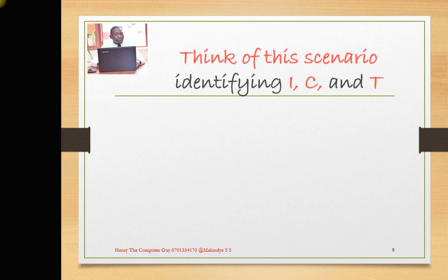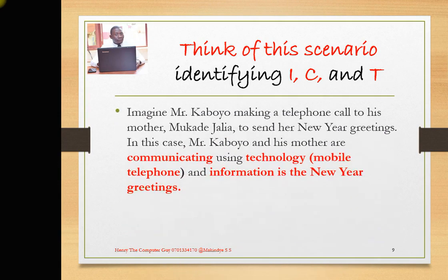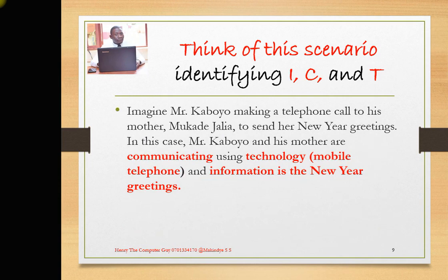We are identifying the I, the C, and the T in some of the components we have identified. They are telling us to think of this scenario: imagine Mr. Kaboyo making a telephone call to his mother, Mkadejalia, to send her New Year greetings. That means Mr. Kaboyo and his mother are communicating using a mobile phone, and Mr. Kaboyo wants to send his mother the New Year greetings.